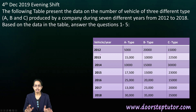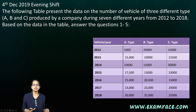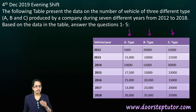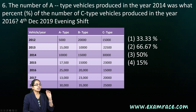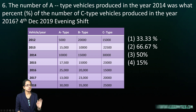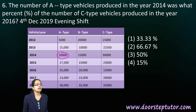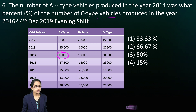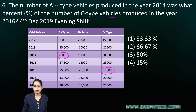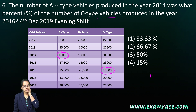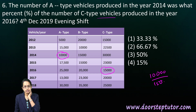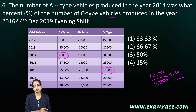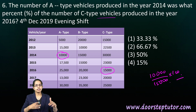The next question shows a table for various types of vehicles that a company produces over 7 different years from 2012 to 2018. There are 3 types of vehicles: A, B, and C. The question asks: the number of A-type vehicles produced in 2014 is what percentage of the number of C-type vehicles produced in 2016? So it is 10,000 divided by 15,000 into 100, giving the required percentage.